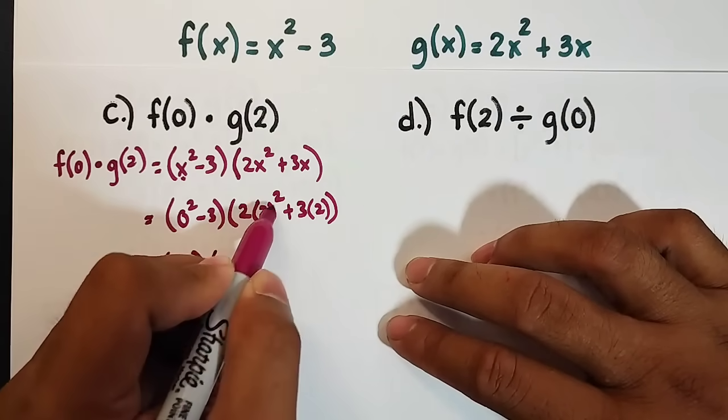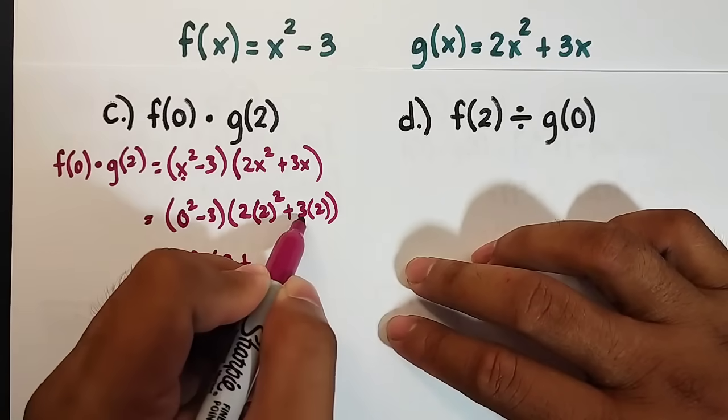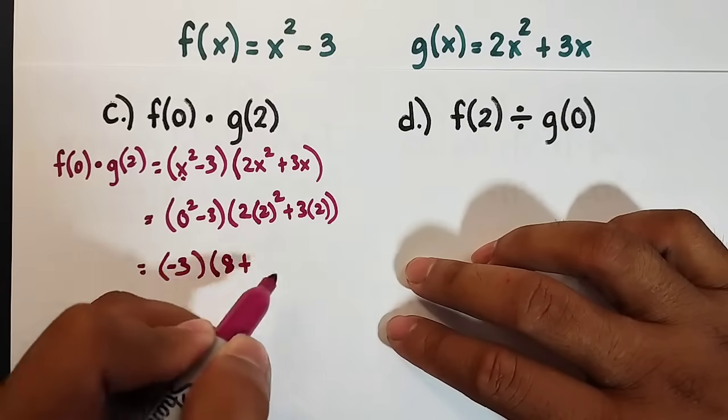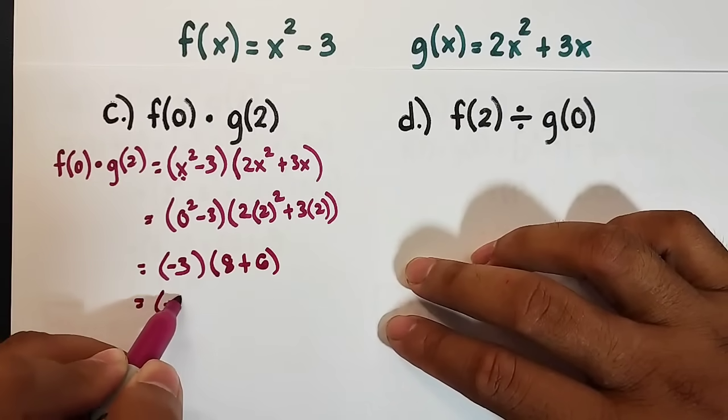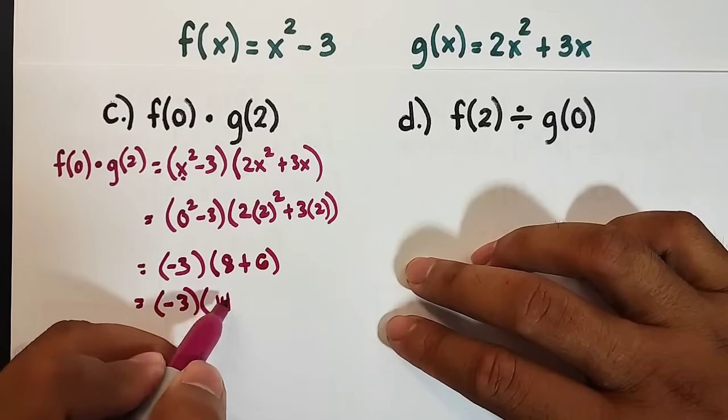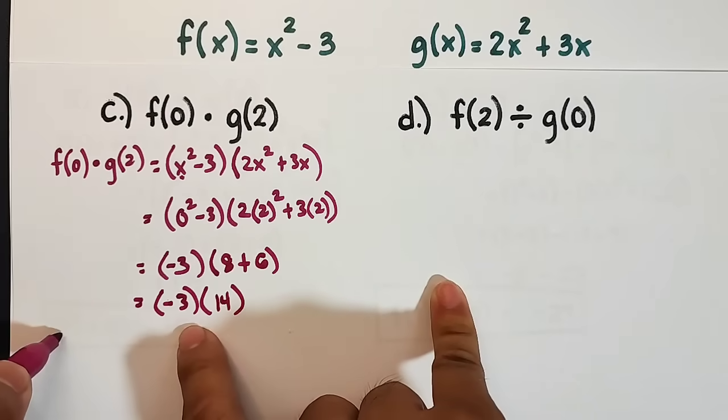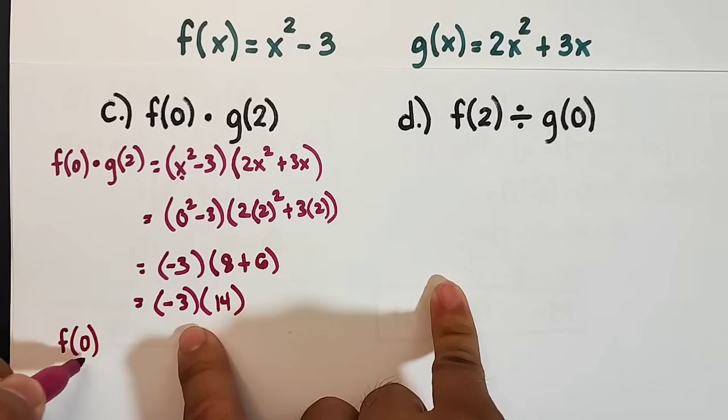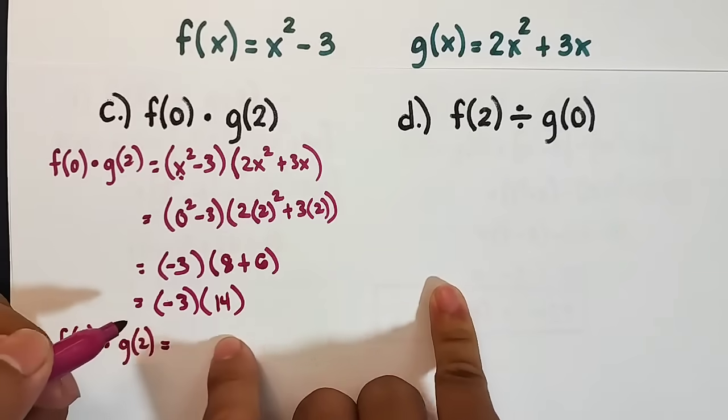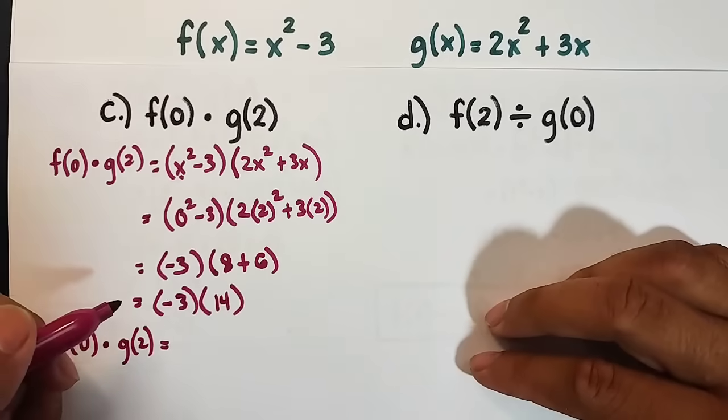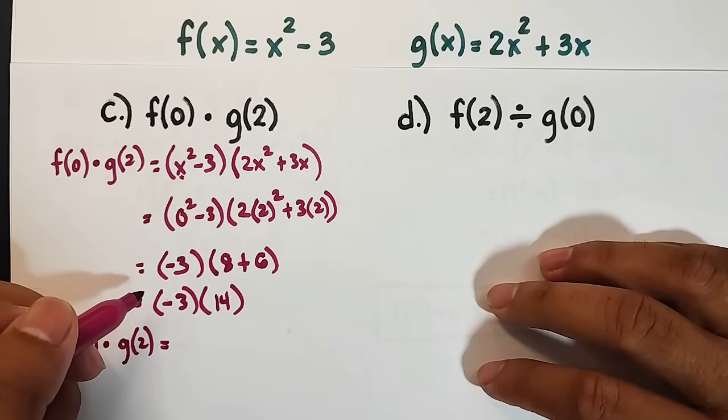Here, 2² is 4 times 2, that equals 8, plus 3 times 2 is 6. Simplify: we have negative 3, then 8 + 6 is 14. So all we need to do is multiply these two integers to find the value of f(0) times g(2). So negative 3 times 14. Negative 3 times 10 is negative 30, negative 3 times 4 is negative 12, meaning this is negative 42.